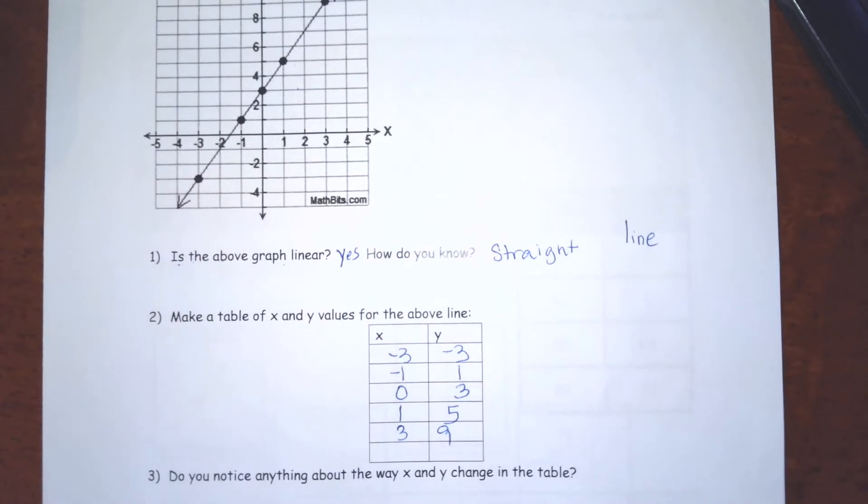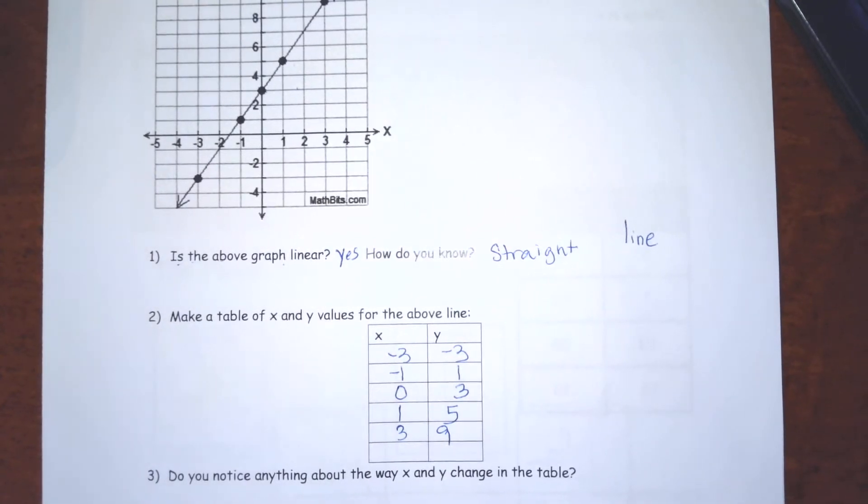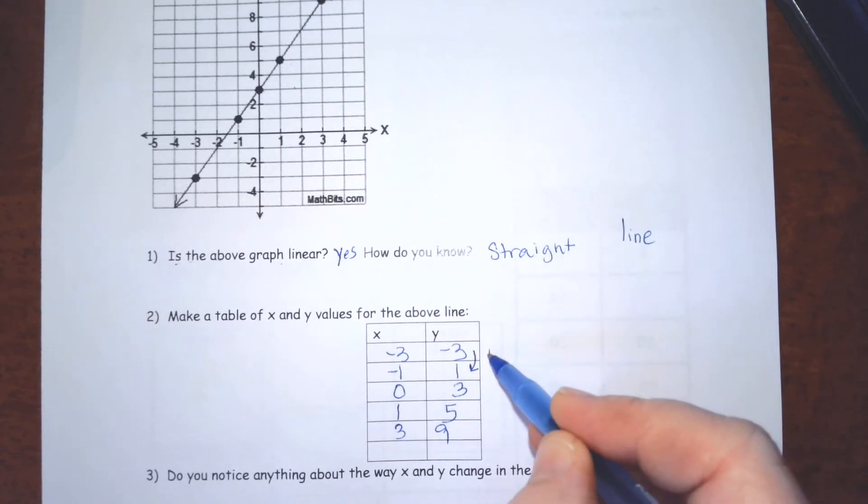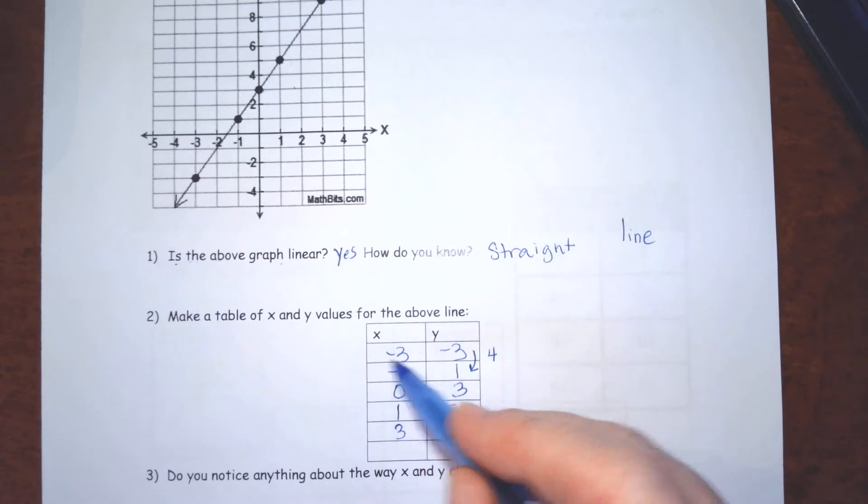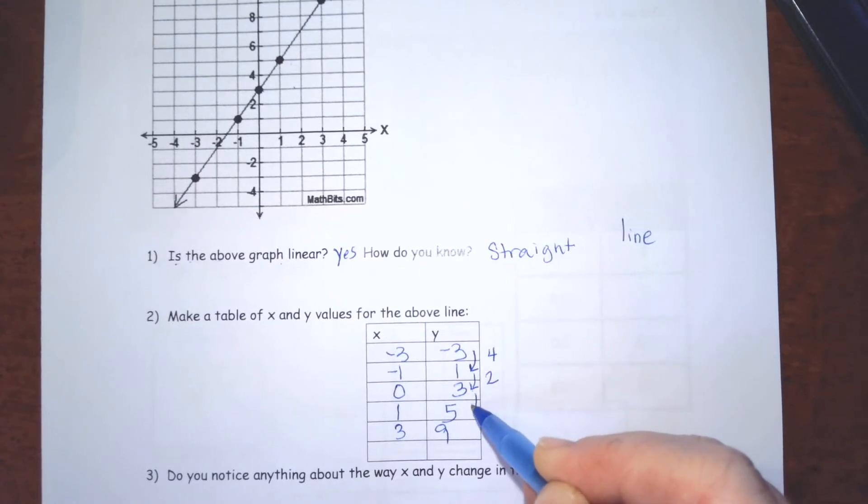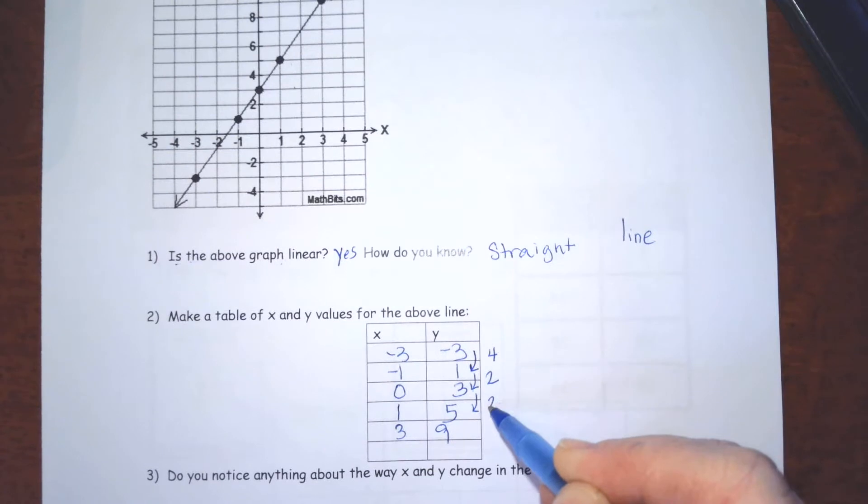Now, what I want you to pay attention to in this section is how these values change as you move down your list. So what's the change from negative 3 to 1? It's going to go up 4. What's the change from 1 to 3? It's going to go up 2. From 3 to 5, it goes up 2. From 5 to 9, it goes up 4. So we're going to write down the way the y values change.